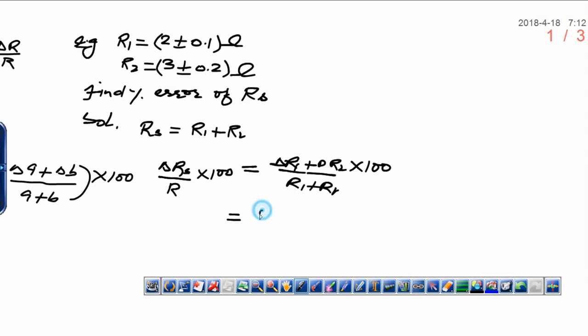What is delta R1? That is 0.1. Plus delta R2 is 0.2. Whole divided by R1 plus R2, that is 2 plus 3, and multiplied by 100. And finally, answer will be 0.3 divided by 5 into 100. One zero will cancel out decimal. Five twos are ten. And finally, you will get 6% error in the addition of these two resistors in series.